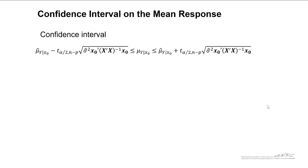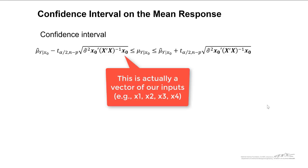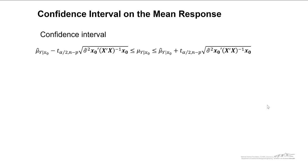Another type of confidence interval is a confidence interval on the mean response. And that is, at a particular x value, we denote this as x naught. And this is a vector. Remember, because our vector x actually has a bunch of inputs. For example, it might have x1, x2, x3, and x4. At that particular combination of inputs, the confidence interval on the mean response basically gives us an idea of where that mean might lie, a 95% confidence interval.